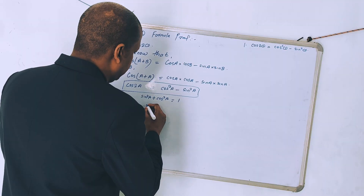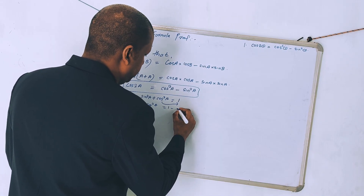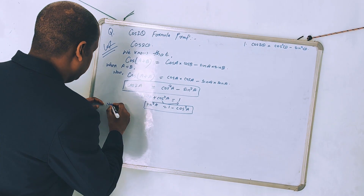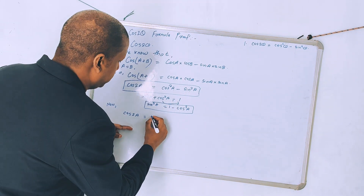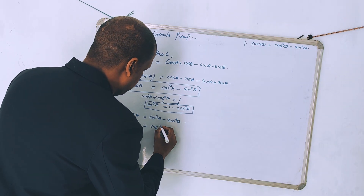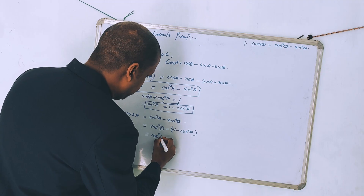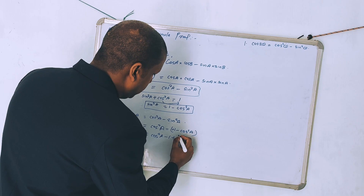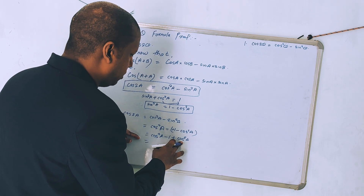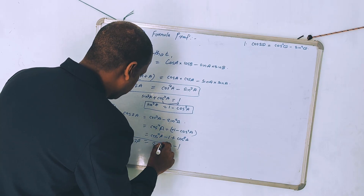From the identity sin² A + cos² A = 1, we can write sin² A = 1 - cos² A. Substituting into cos 2A = cos² A - sin² A, we replace sin² A with (1 - cos² A). This gives cos² A - (1 - cos² A) = cos² A + cos² A - 1 = 2cos² A - 1. So cos 2A = 2cos² A - 1.